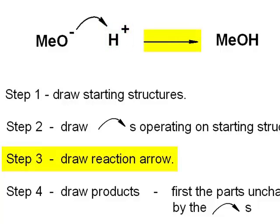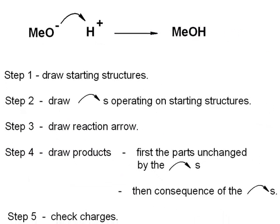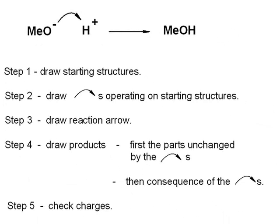And then you write the reaction arrow itself, and then you write the products from that. And you can deduce the products from the mechanism, or if you know what the product is, you can interpret a mechanism to describe how to get there. We check the charges. That's step five. We have an anion reacting with a cation. So overall, the starting materials are neutral. This means that the product must also be neutral.